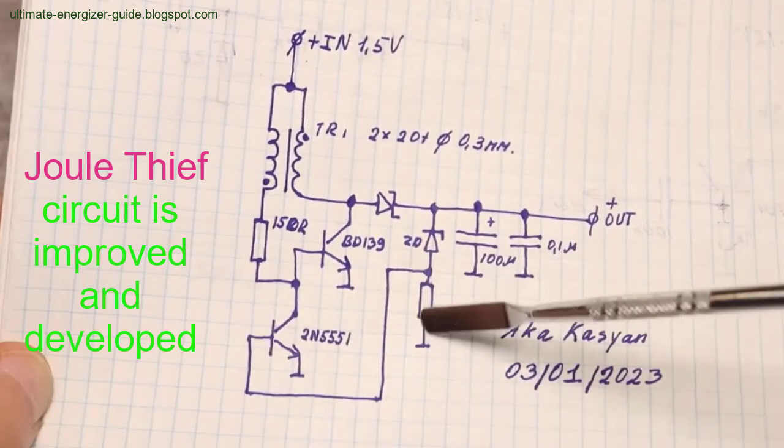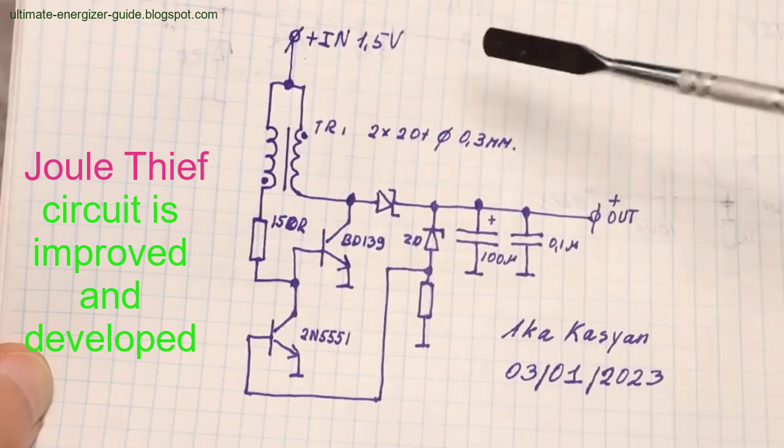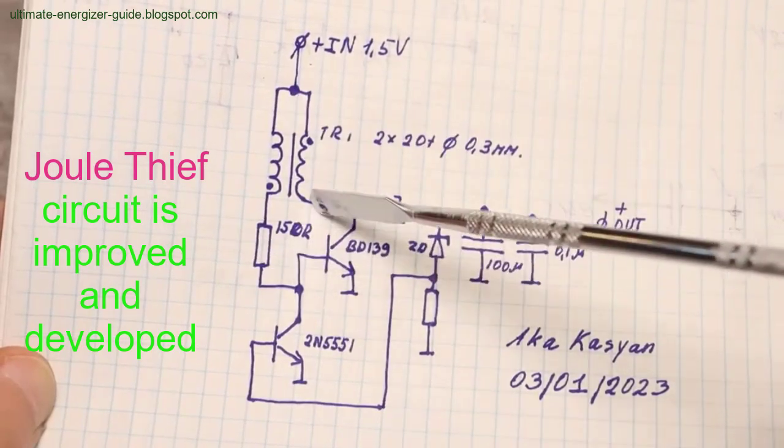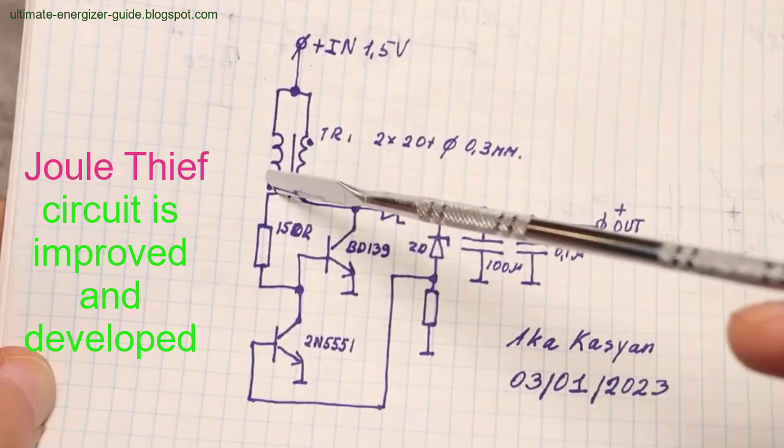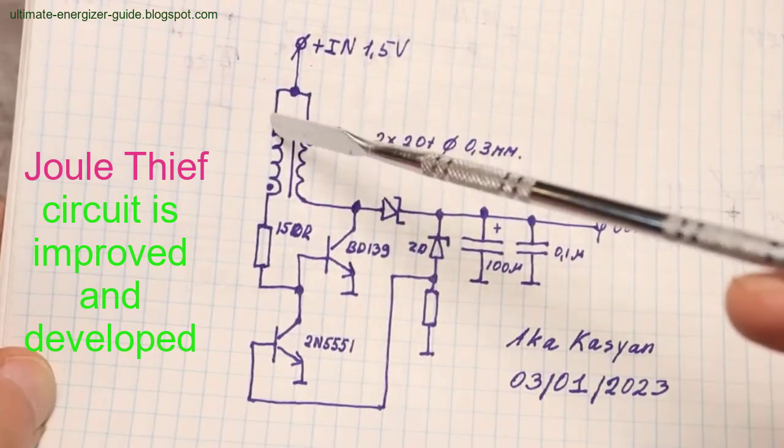However, the continued interest in the Joule Thief circuit and other free energy devices suggests a growing curiosity and willingness to explore alternative theories. By understanding and refining the principles of ether physics, researchers can potentially develop more efficient and accessible free energy generators, revolutionizing the way we think about and utilize energy.